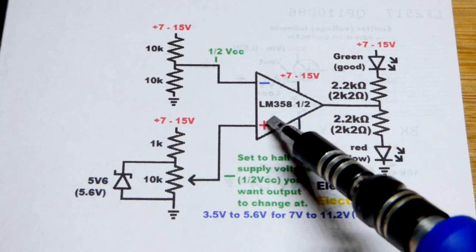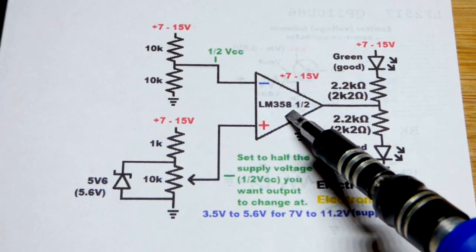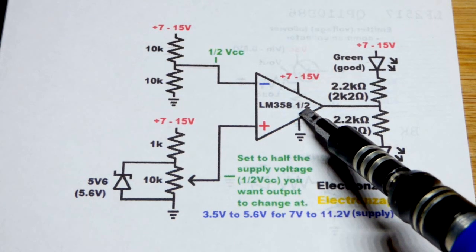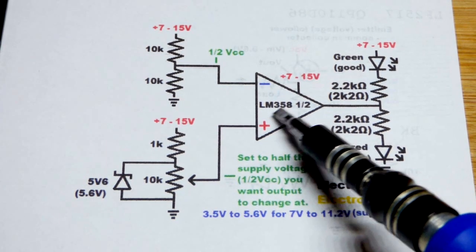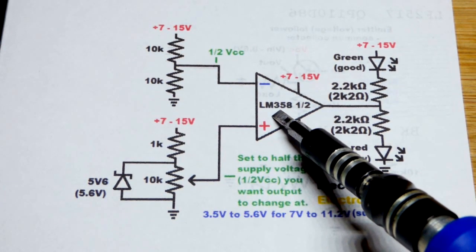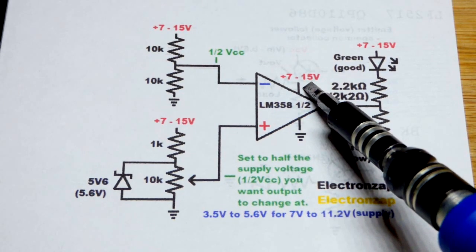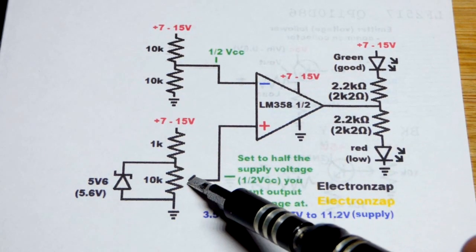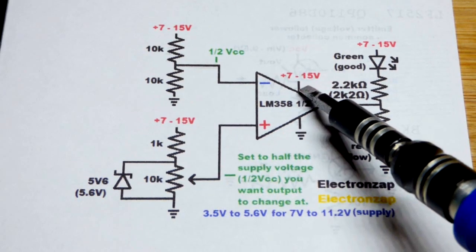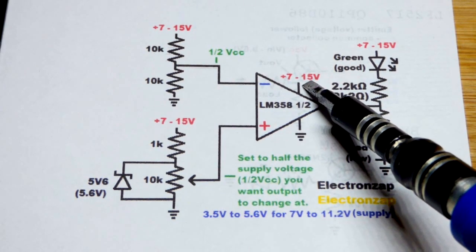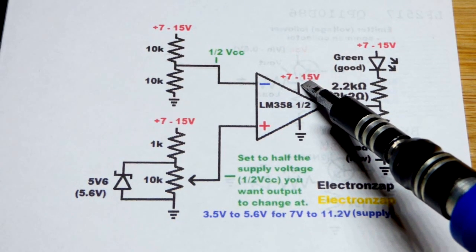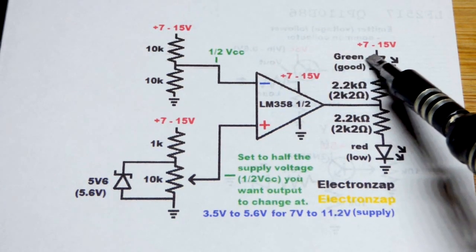Now in this video we're going to use the LM358 op amp. There's two of them in the integrated circuit, we're only going to use one. We're going to wire this up so that depending on the power supply voltage, we'll be able to adjust the exact value, but if the voltage is above a certain point we'll have a green LED light up.